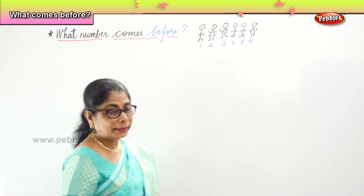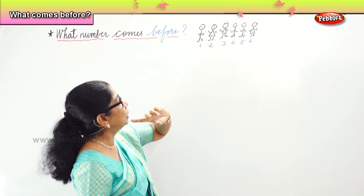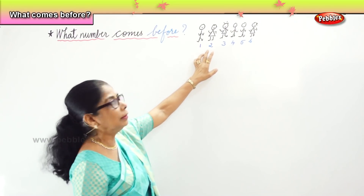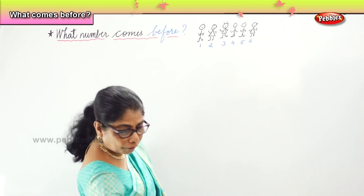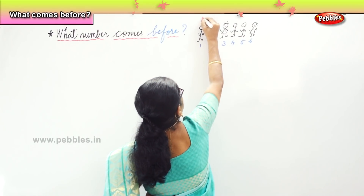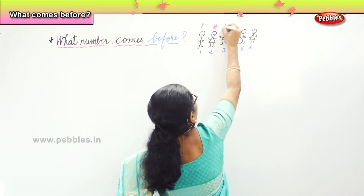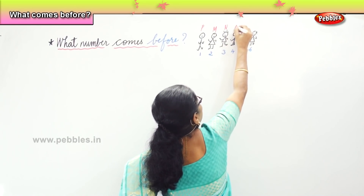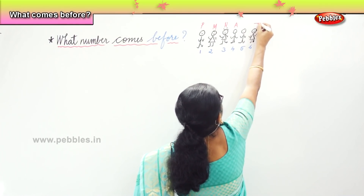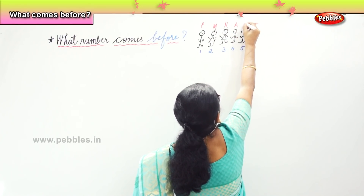Now you look at it and tell me — which girl is standing before three? Supposing I put names for all of them: this is Peter, this is P, this is M, this is N, this is Ajay, this is Mary, this is Tina, and this is R.